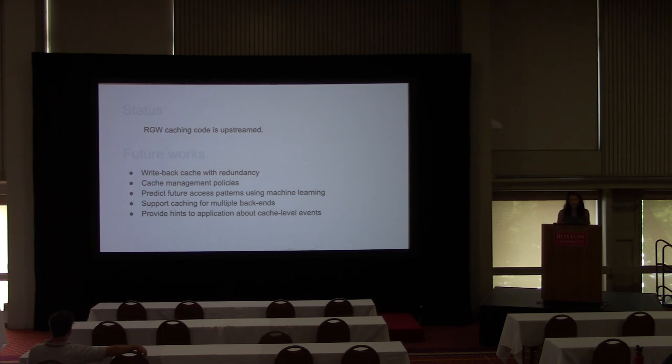The status of the project is we upstreamed the code. The read cache code is upstream. Next step is to add the prefetching mechanism there. The features in progress - we are trying to make sure the write-back cache has some redundancy because we want to tolerate failure scenarios. We want to look at cache management policies. Right now, the caches are using LRU. We want to use some smart caching using machine learning techniques. We want to predict future accesses and predict access patterns to prefetch data before clients even access. We also want to support multiple backends. Right now, current design supports only single backend. We also want to use cache-level events to hint the application. What I mean is, applications are not aware of what is in the cache. If we provide some hints to the application, then the application can rearrange its I/O or jobs.